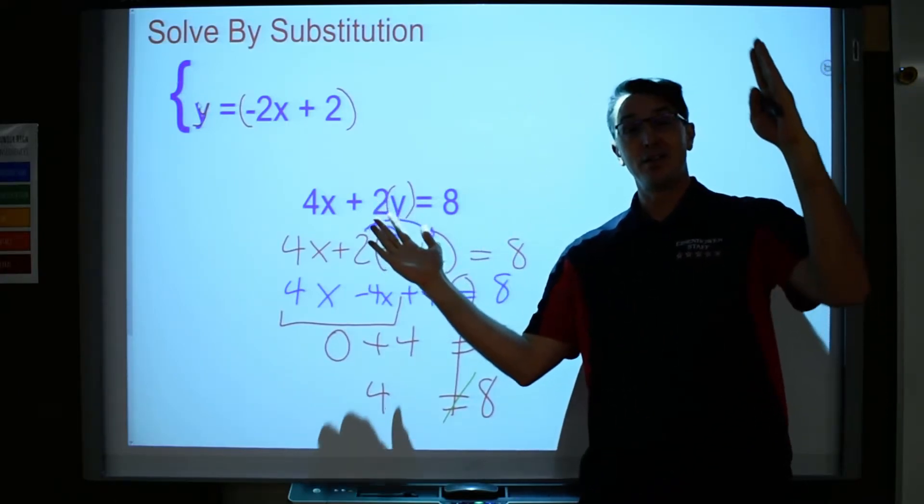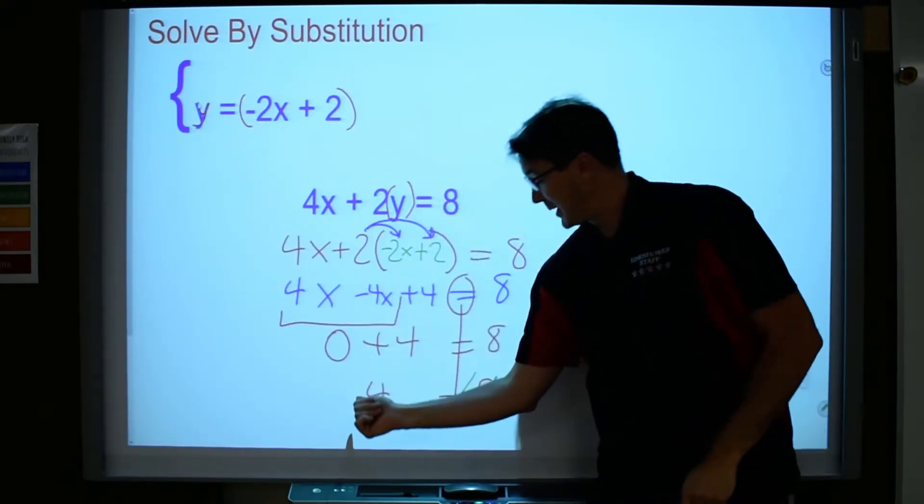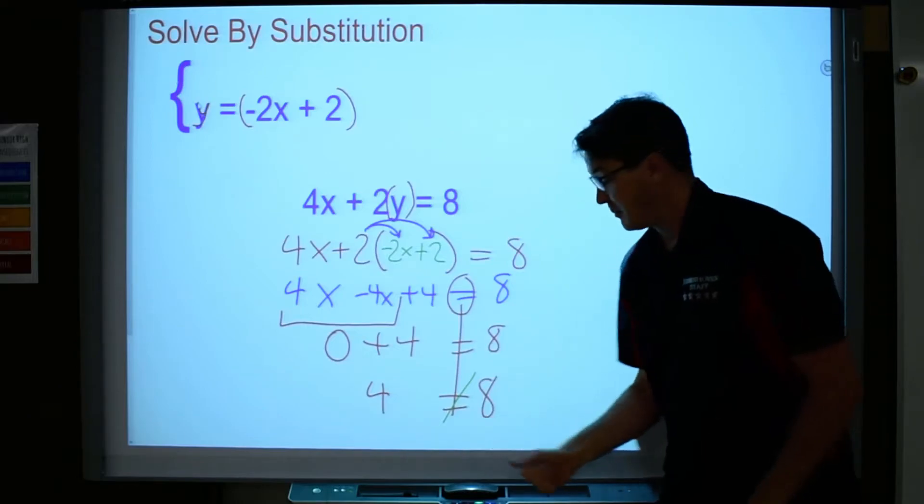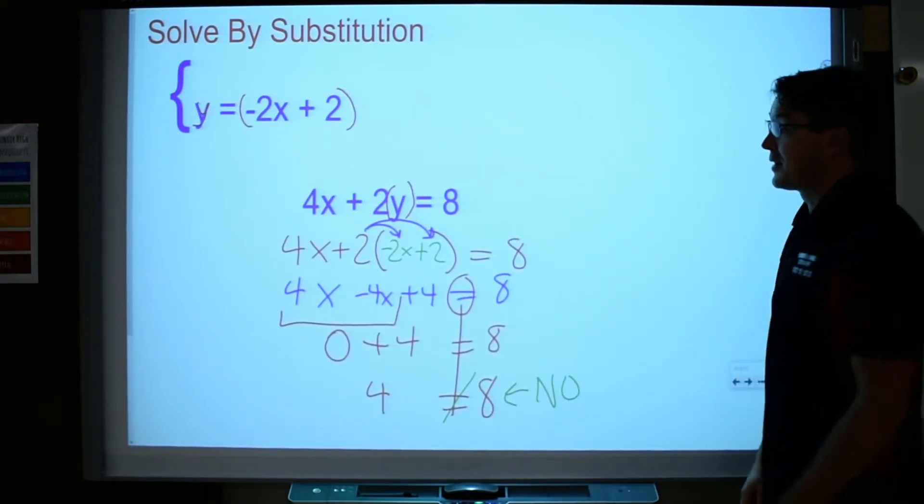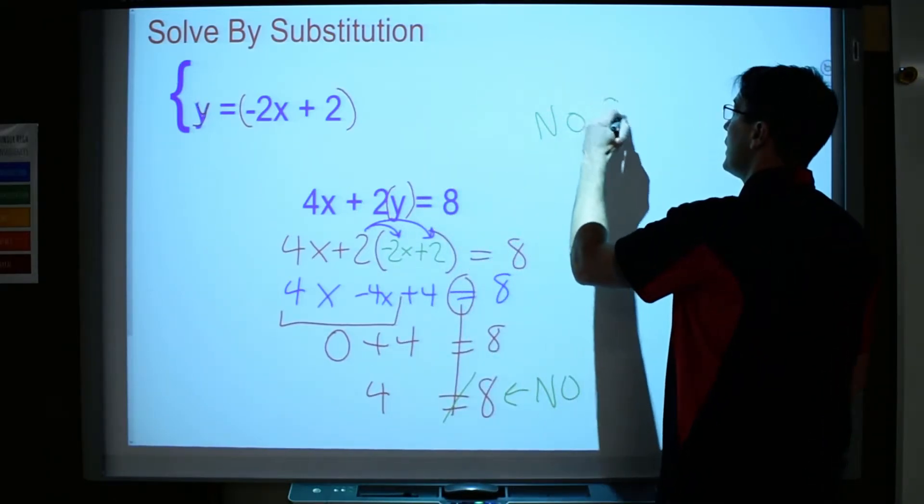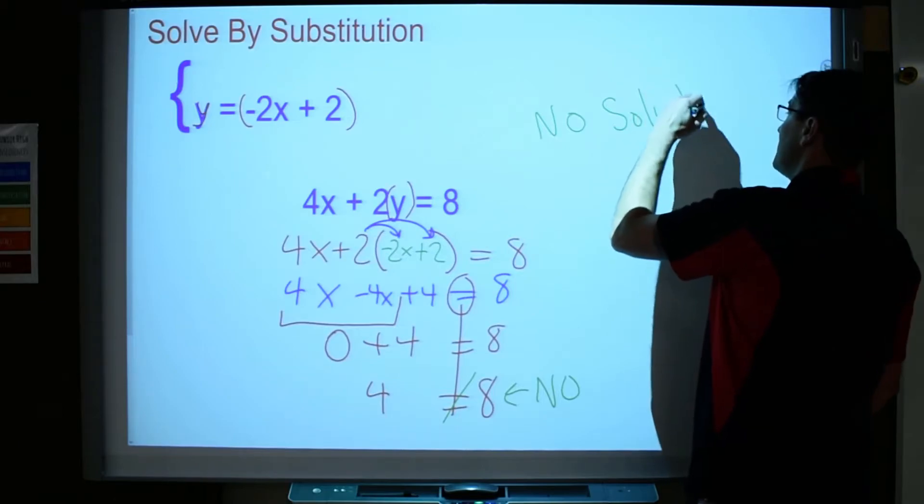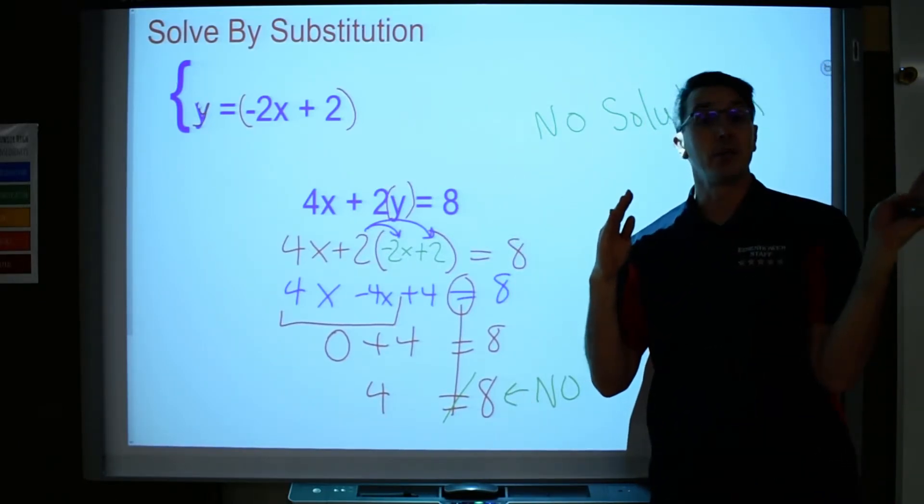But when lines don't intersect, then you have no solutions. And so because this doesn't work, because no, this does not work, that's not equal, then I can tell you that this system of equations has no solution. It means the two lines are probably going to be parallel and they'll never cross.